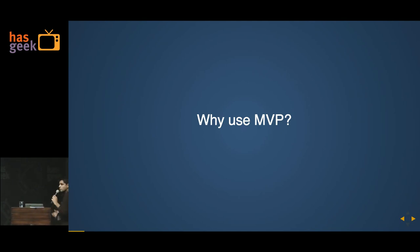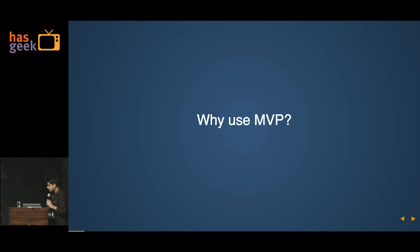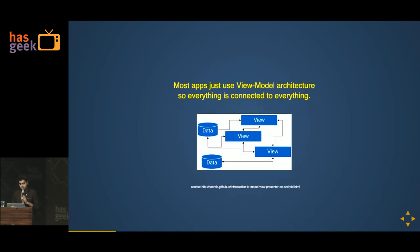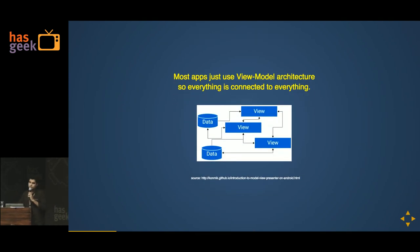So why do we use this is the first question. MVP allows you to get a clear picture. This is what most apps look like right now — there's data, there's views, and everything is just jumbled, everything is happening everywhere.